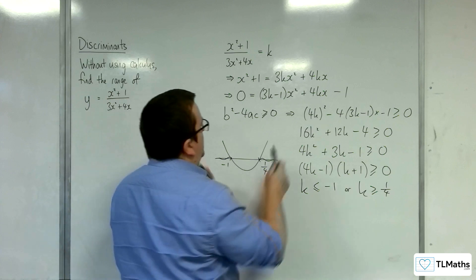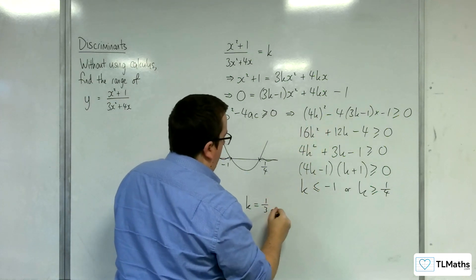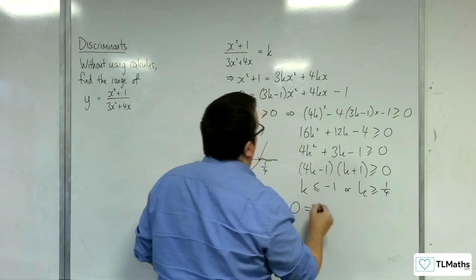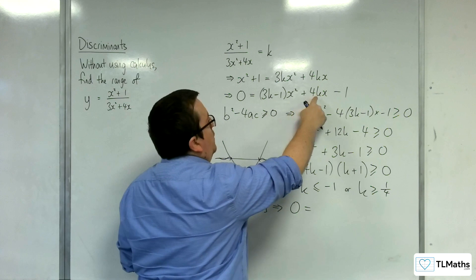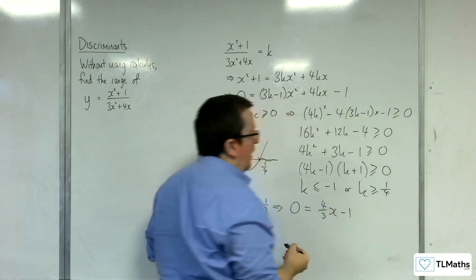So I'm just going to check k is 1 third into our quadratic. And we get 0 equals, well, 0x squared, 4 lots of a third. So 4 thirds x take away 1.